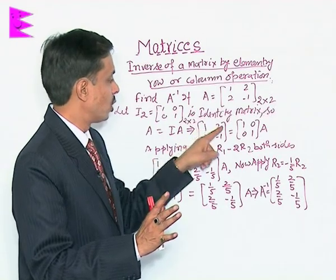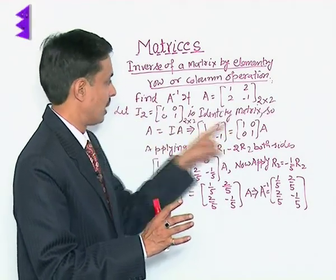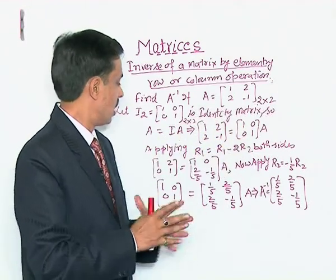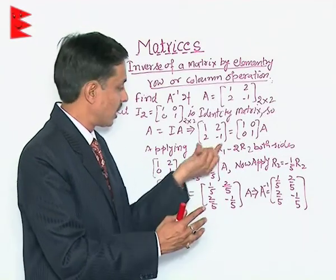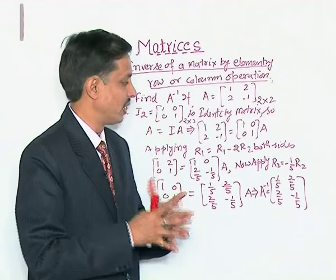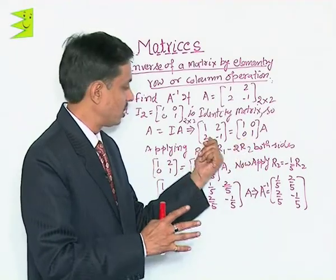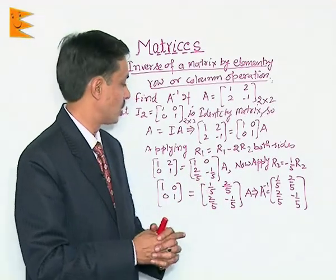So, A is [[1, 2], [2, -1]] on left hand side and on the right hand side in place of I, [[1, 0], [0, 1]] and this A as it is. Now, we want to apply operation in such a way that left hand side becomes the identity matrix because the product of the two matrices if it is equal to identity matrix then these matrices are inverse of each other.